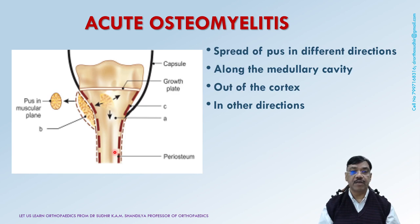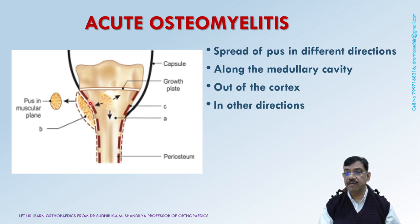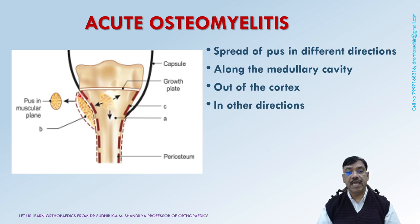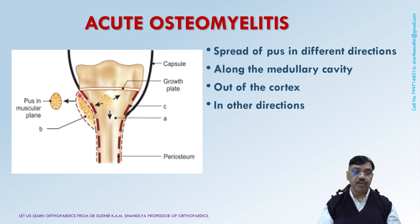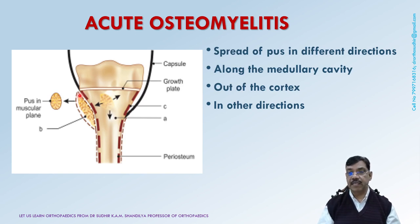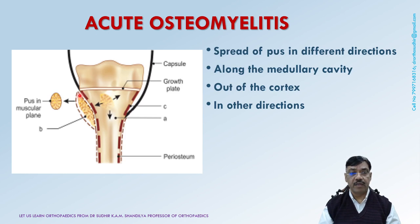Blood supply to a segment of the bone is thus cut off. Secondly, pus travels out through the cortex via Volkmann's canals and comes to lie subperiosteally, resulting in damage to the periosteal blood supply of that part of the bone. A segment of bone thus becomes avascular — we call it the sequestrum. The dimensions of this avascular segment may vary from a small invisible piece to the whole diaphysis. The pus under the periosteum generates subperiosteal new bone, which we call the periosteal reaction.